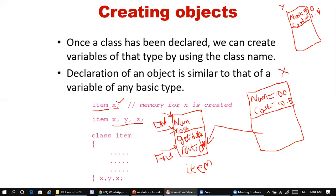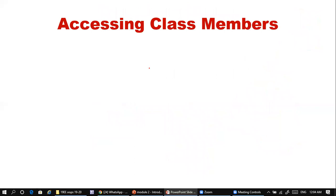Object x has number = 100 and cost = 10.5, while object y has number = 50 and cost = 1.5. Each object can have different values. You can also create objects right after the class body, before the semicolon — both methods are valid.